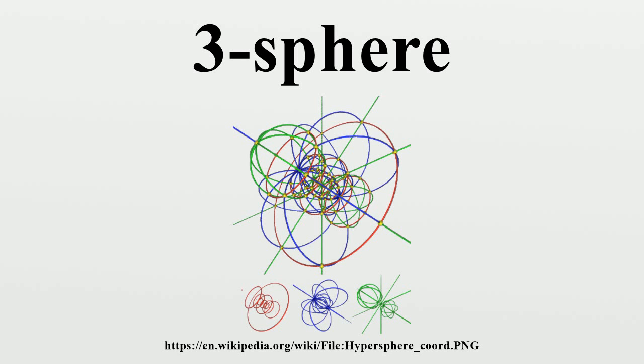As with all spheres, the three-sphere has constant positive sectional curvature equal to 1/R2, where R is the radius. Much of the interesting geometry of the three-sphere stems from the fact that it has a natural Lie group structure given by quaternion multiplication. The only other spheres with such a structure are the zero-sphere and the one-sphere.